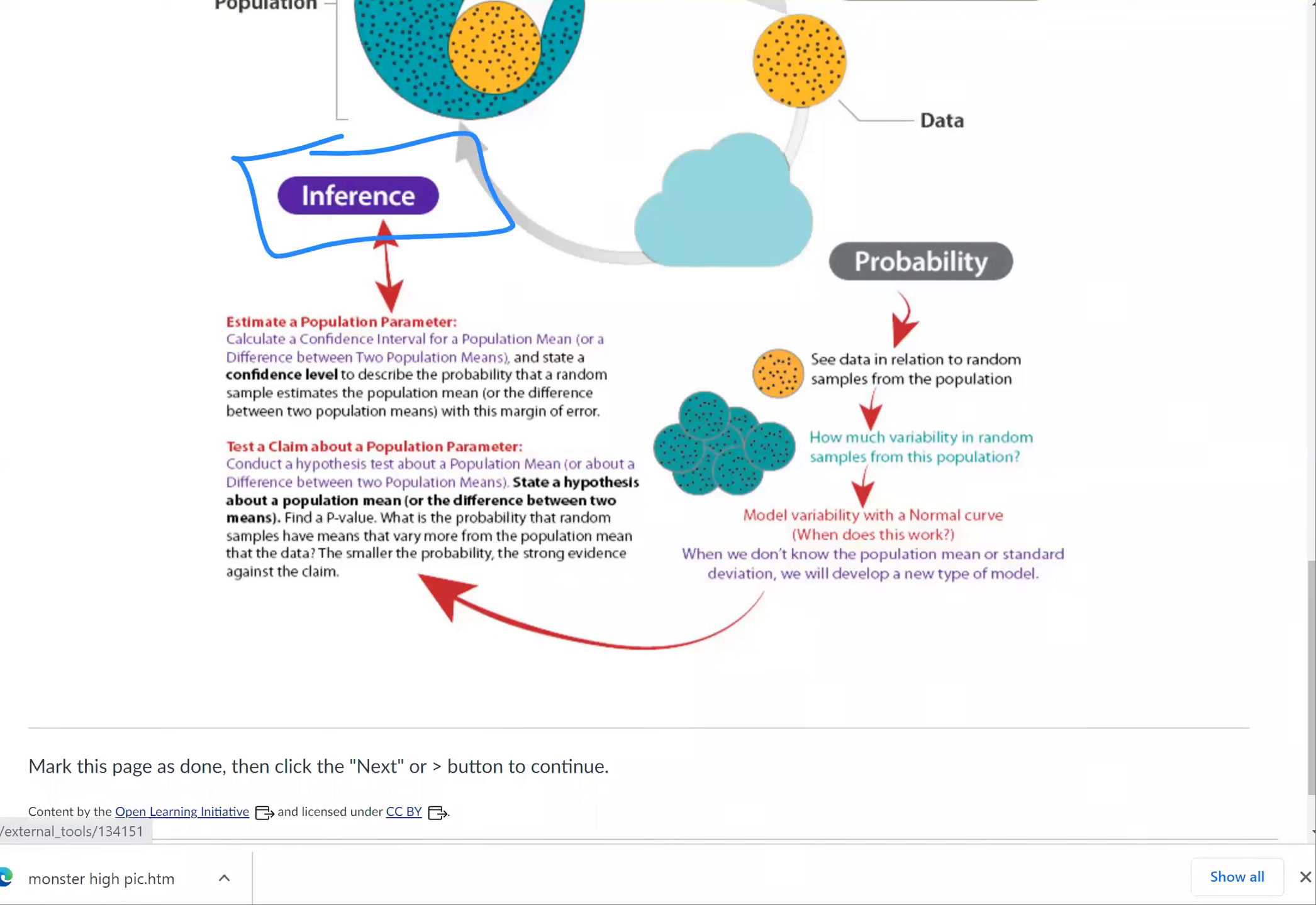That's kind of a new thing. We're going to calculate a confidence interval for a population mean instead of a proportion. Because before we talked about population proportions or sample proportions, that's essential for categorical variables. But now we'll calculate a confidence interval for a population mean because we're talking about quantitative variables, or a difference between two population means if we're comparing two populations.